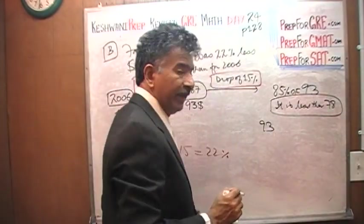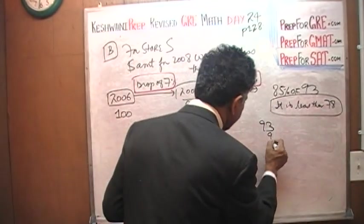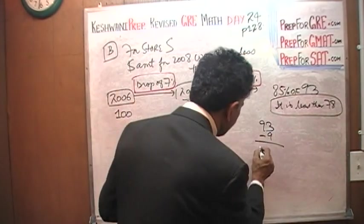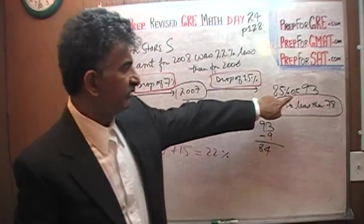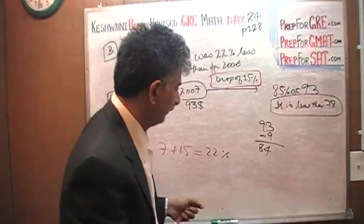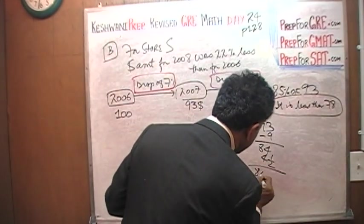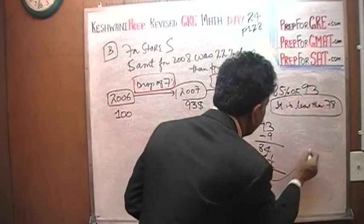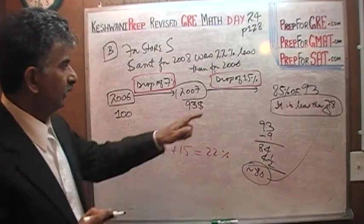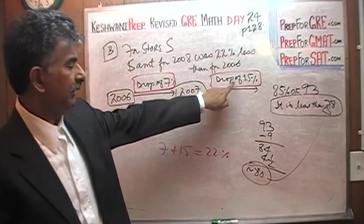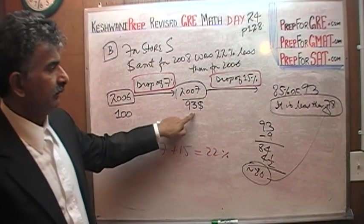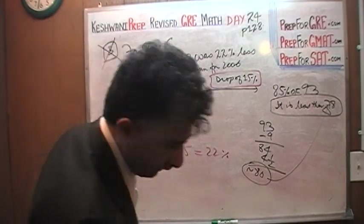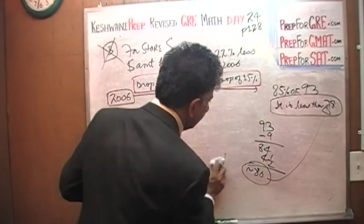15% drop. So 93, 10% of 93 is 9, so if you drop 9 from it, approximately 9, 93 minus 9, 93 minus 10 is 83, so it's going to be 84. And then we want another 5%. Another 5% of 93 is about 4 and a half. You will end up with about $80. You will not have 78. And the reason is because this 15% drop is not a 15% drop of 100, it's a 15% drop from 93. So that is not true. The second statement is not true.